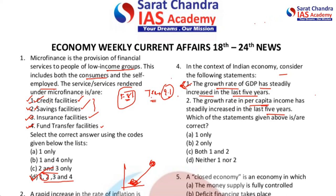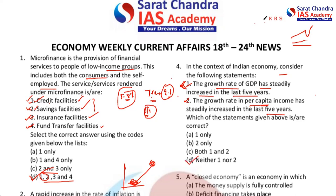Our TFR is now around 2.1. When the growth rate is not steady, automatically per capita income will also be impacted drastically. In the last five years, there has been no continuous steady growth because of the COVID year. So net per capita income growth rate is also not steady. The answer is neither one nor two.